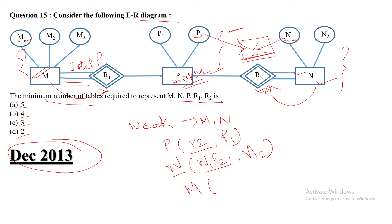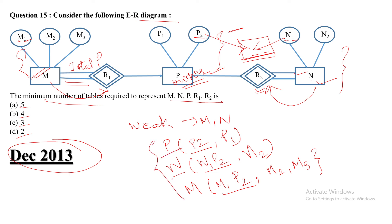The same logic applies to entity M. The partial key is M1, and the key attribute of the owner entity is P2. So M1 and P2 together are the key attributes of entity M, along with M2 and M3. So the minimum number of tables required is three: P, N, and M.